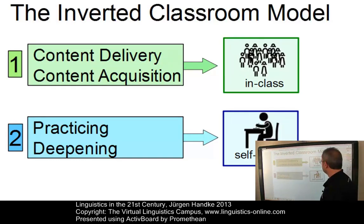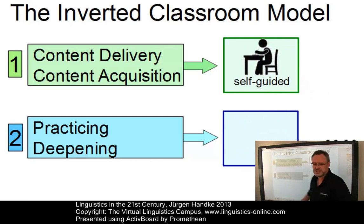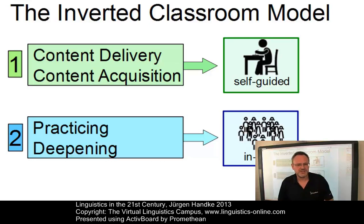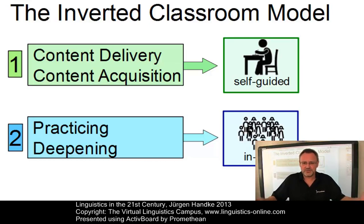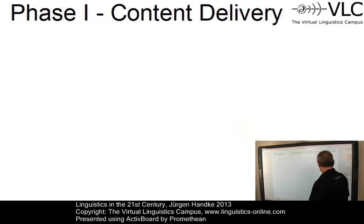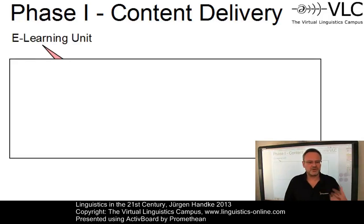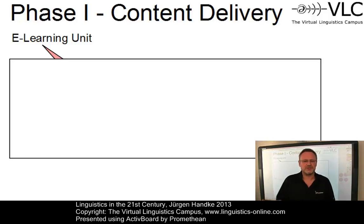The inverted classroom flips or inverts these two activities. Content acquisition is now self-guided, takes place first and is done online. The additional in-class phase is now dedicated to practicing, rehearsing, discussion, analysis, etc. This means that prior to each in-class meeting, students must have worked through the online content of the respective e-learning unit. In phase one, students are now autonomous learners. They are given the content by means of what we call an e-learning unit, which contains the content they have to go through prior to each in-class meeting.